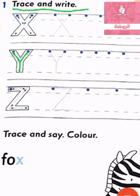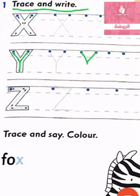Now, I want to write capital Y. From this point, from line one, slide down, stop on the middle. Slide down, stop on the middle. Down, and stop on the third line.